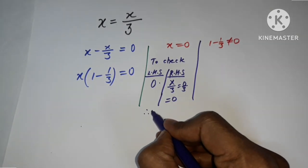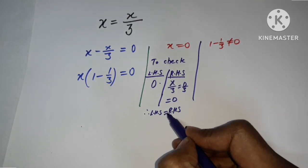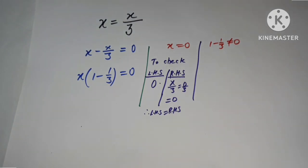LHS and RHS both are equal for x equals 0, so this is our solution.